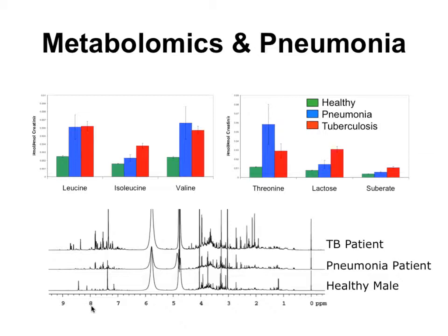People with pneumonia and TB have very high levels of branched-chain amino acids, but also very different levels of lactate and suberate. Because of the different combinations, it is possible to use metabolomics with six or seven biomarkers to distinguish between viral pneumonia, bacterial pneumonia, healthy controls, and people with TB. In the developing world, being able to distinguish between bacterial and viral pneumonia and TB is very, very important.